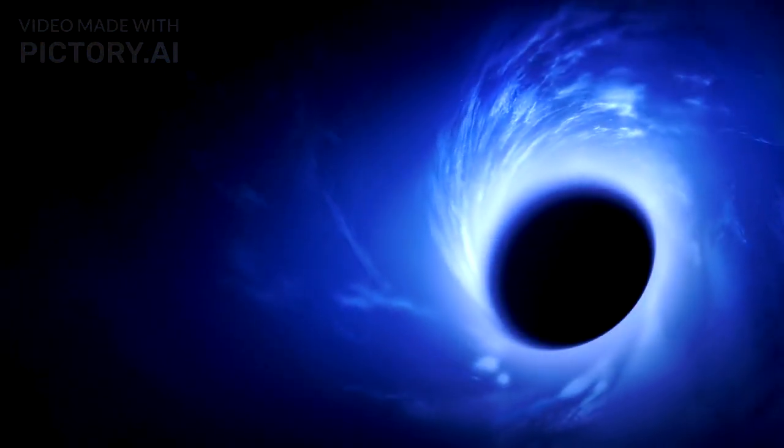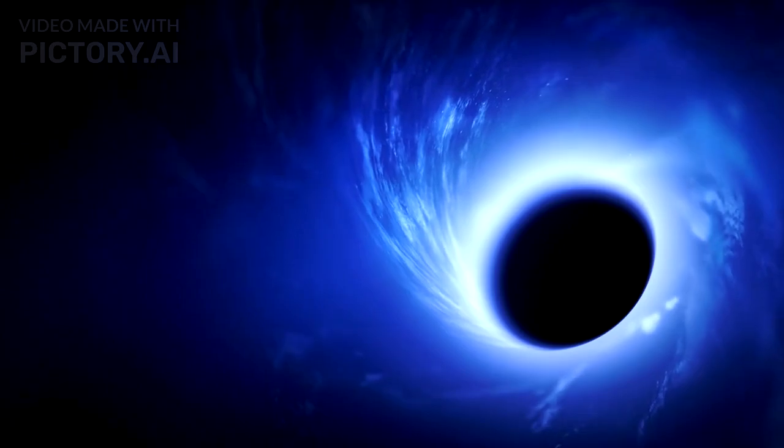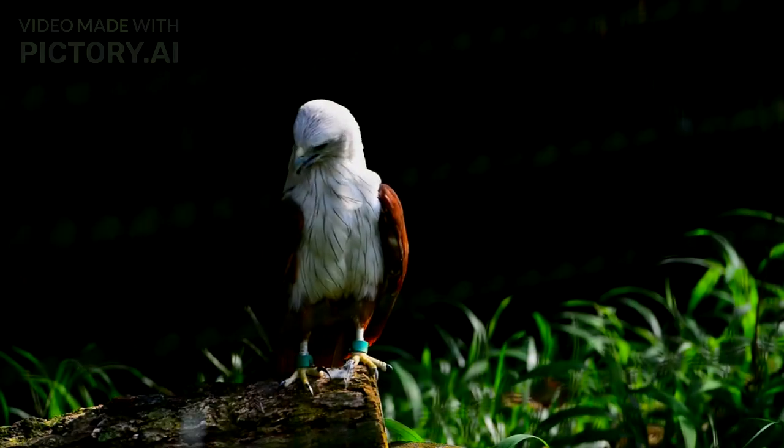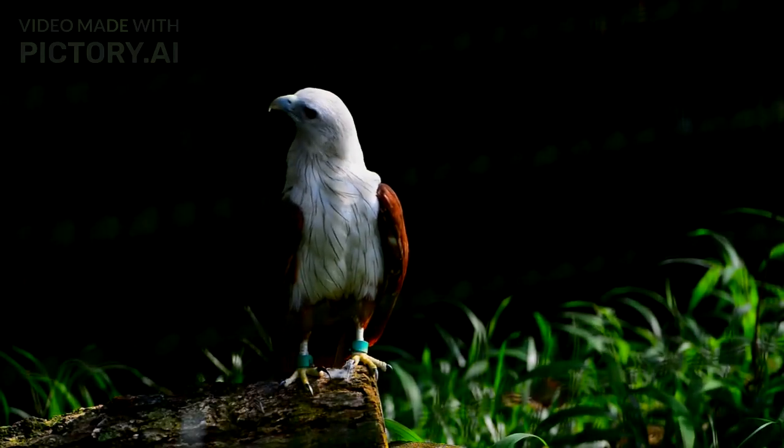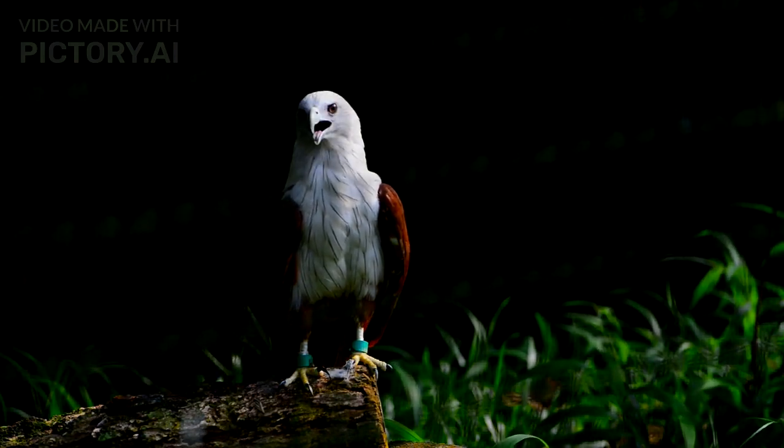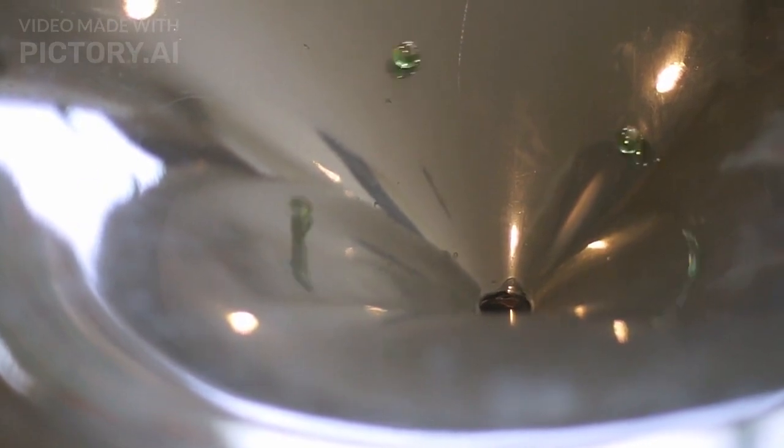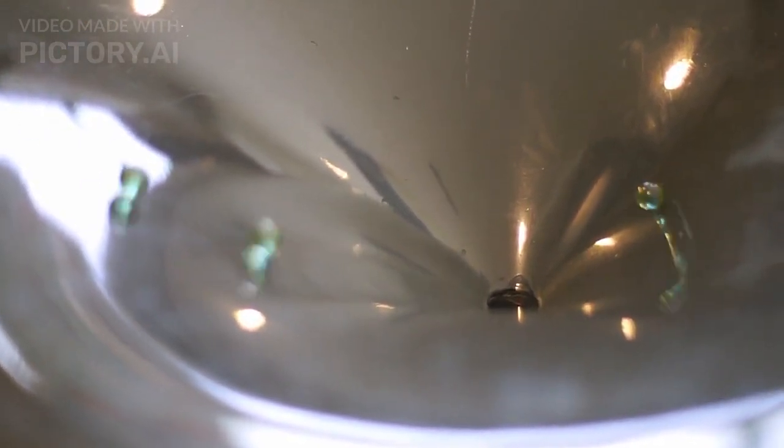Hypothesized to have formed in the early universe, these black holes could range from tiny to supermassive. Adding to this intrigue, Stephen Hawking's theory of Hawking radiation proposes that black holes emit faint radiation, suggesting they can slowly evaporate and vanish, revolutionizing our understanding of black hole dynamics and spacetime.